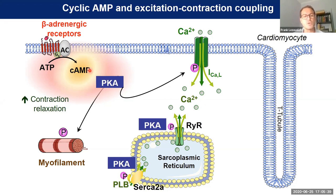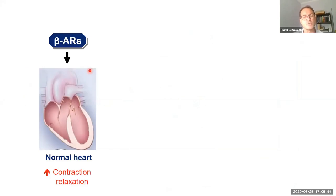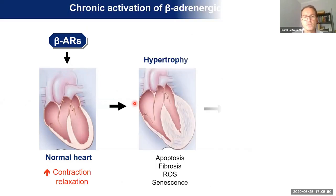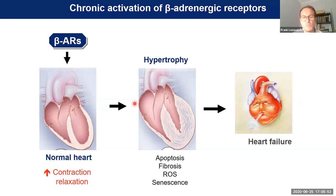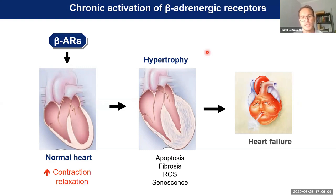However, during stress conditions such as an excess of catecholamines, this chronic activation of the beta-adrenergic receptor is detrimental to the heart and can induce cardiac remodeling, which can lead to heart failure. So it is really important to dissect the molecular mechanisms which couple the beta-adrenergic receptor to cardiac remodeling.